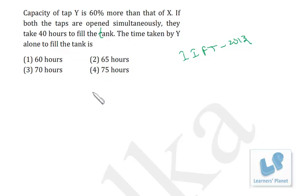Okay, capacity of X and Y. Suppose capacity of X is 1, then capacity of Y will be 1.6, or 60% more than that. That means 1 plus 3 by 5. 60% is nothing but 3 by 5, so 1 plus 3 by 5 is actually 8 by 5. That means the capacity ratio is this.